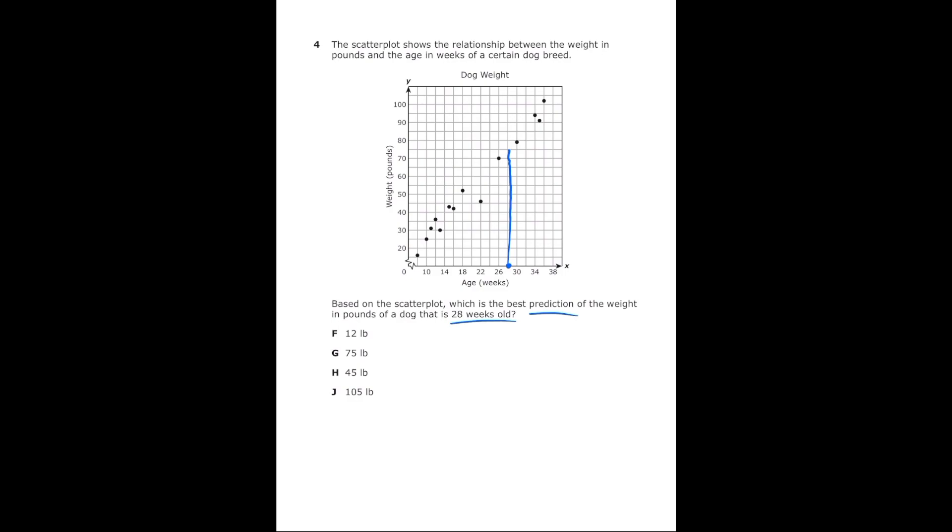That way I can get a rough estimate of what my prediction should be for the weight in pounds. Whenever I do that I see that it's about 75 and by looking at my answer choices we actually have exactly 75 which is letter G.